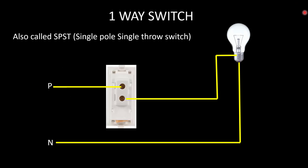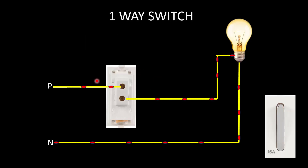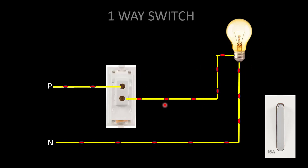Let's look at one-way switches in detail. On the back side of a one-way switch, you can see two terminals. Phase comes into the switch and goes out to the bulb or lamp, while neutral is connected directly to the light. This is a single pole single throw switch — only the phase comes into the switch. In off position, there is no current flow. When switched on, current flows through the circuit and the lamp glows.